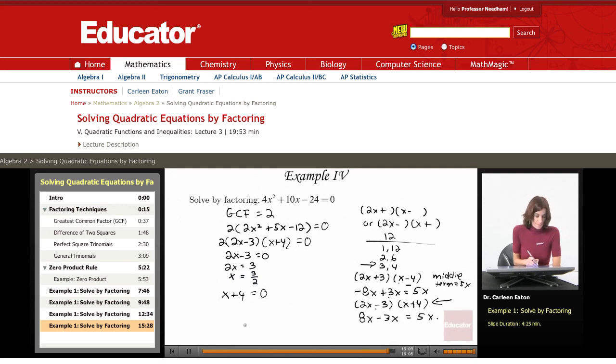So I just need to go ahead and solve those to get 2x equals 3 or x equals 3 halves. Here, I just have x plus 4 equals 0. And that's simple, it's x equals negative 4. So I have two solutions: x equals 3 halves and x equals negative 4.